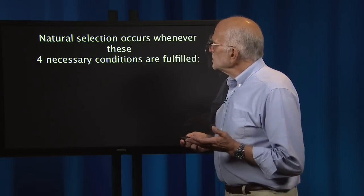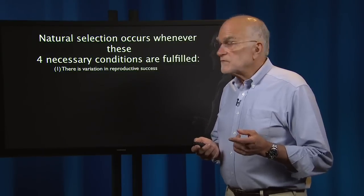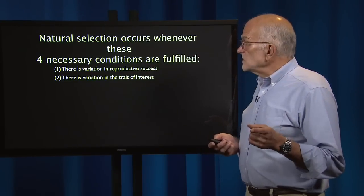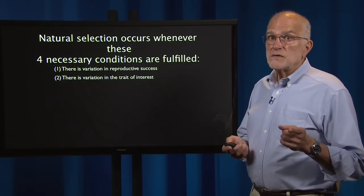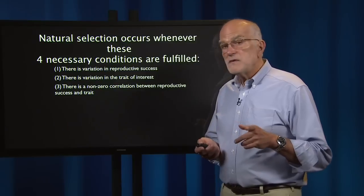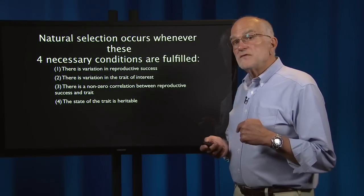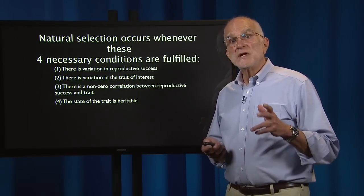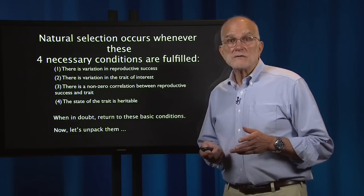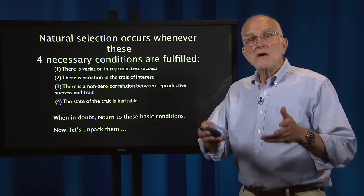Natural selection occurs whenever these four necessary conditions are fulfilled. First, there's variation in reproductive success. Second, there's variation in the trait of interest. Third, there's a non-zero correlation between reproductive success and the trait. And fourth, the state of the trait is heritable — there's genetic variation for the trait. When in doubt, return to these basic conditions. They help you understand whether or not natural selection could be operating on anything.